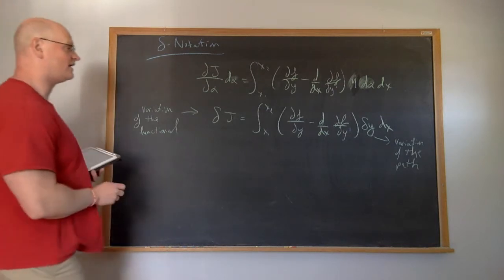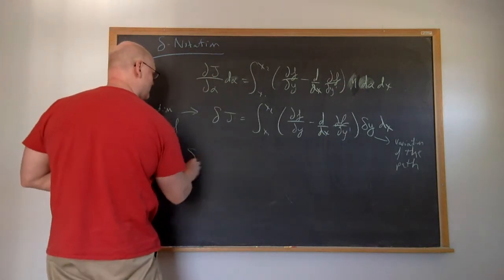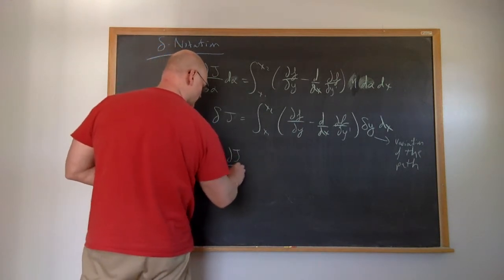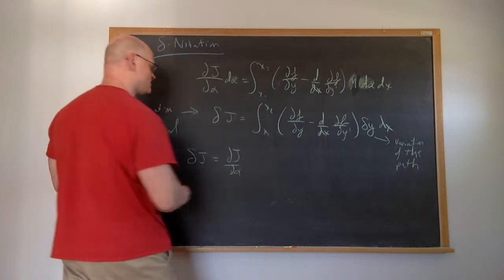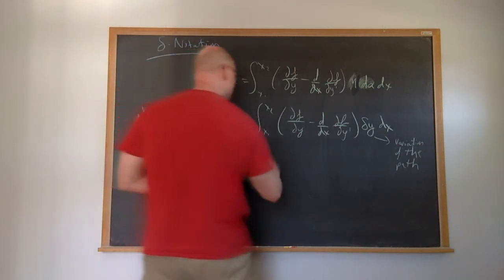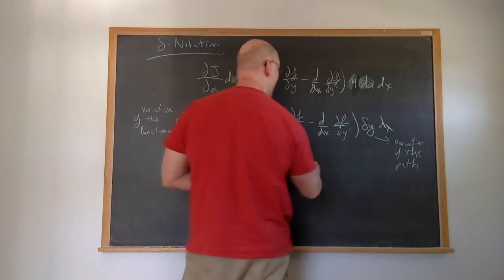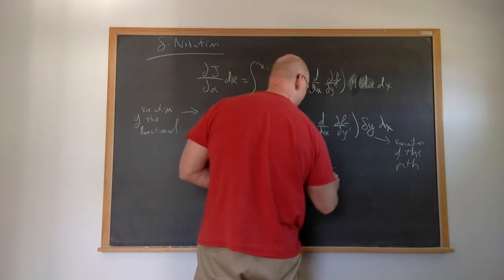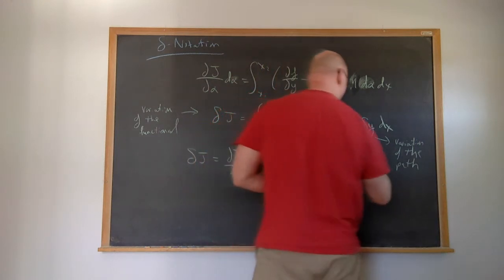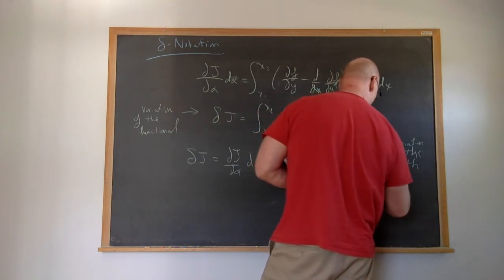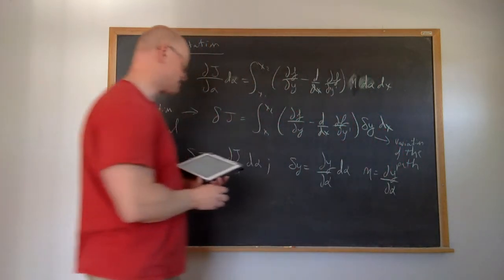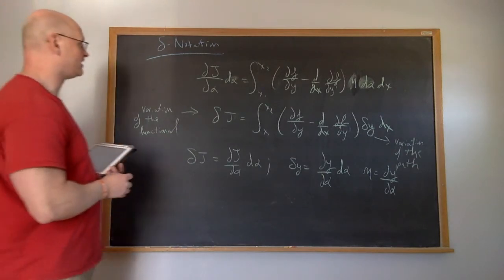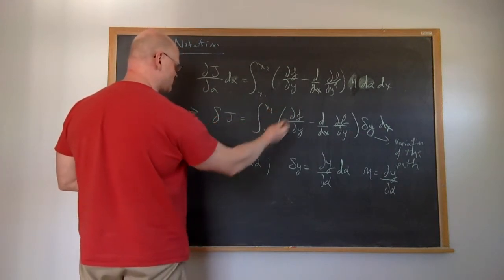Here we're using the fact that the variation in the functional is the same thing as the partial derivative of the functional with respect to alpha times d alpha. And the variation in the path is the same thing as the partial of y with respect to alpha times d alpha, where eta is equal to the partial of y with respect to alpha by its definition. So basically, the extremization of the functional integral comes from the fact that this thing must be equal to zero.